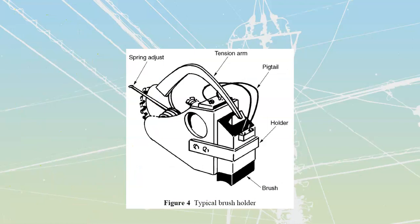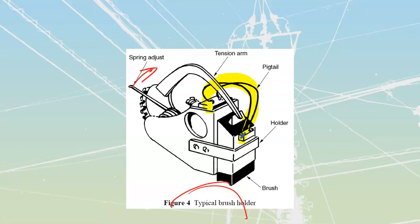That covers our brushes and brush holders. The brush has flexible copper leads permanently attached to it, referred to as pigtails, which give us a connection point for the machine's external wires. A tension arm with a spring drives the brush down to maintain pressure against the commutator. As the brush wears down, you can move a bar to the next notch to push the brush further and maintain the proper pressure.